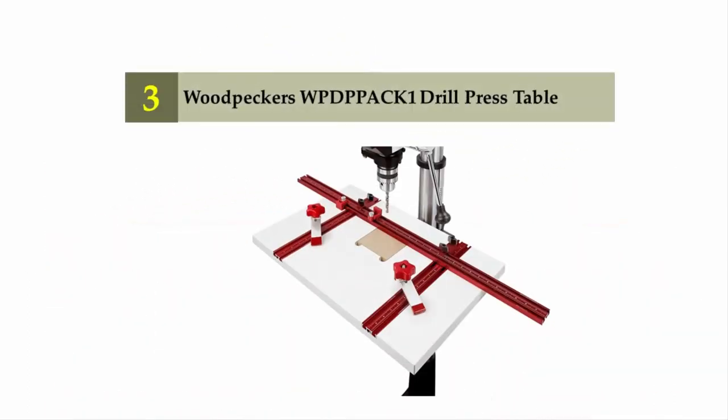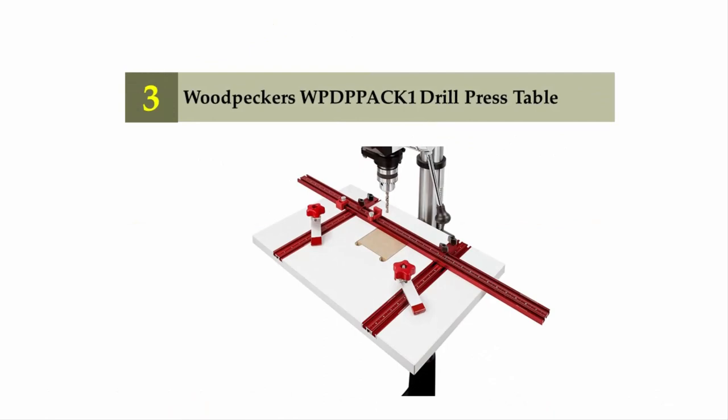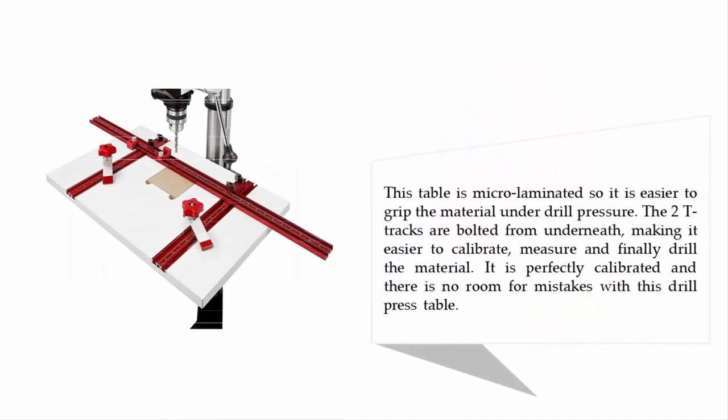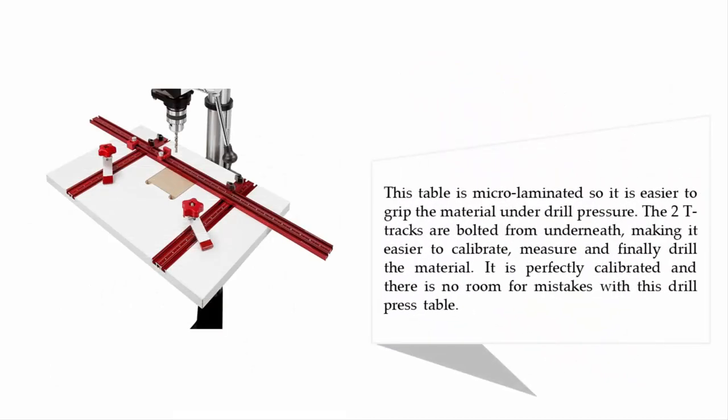Halfway on our list at number three, Woodpeckers WPDPPACK1 Drill Press Table. Woodpeckers WPDPPACK1 is a drill press table that aims to be both practical and affordable. This is a complete drill press table package with a high density MDF core measuring 16 inch by 23 inch by 1 inch. This table is micro laminated so it is easier to grip the material under drill pressure.